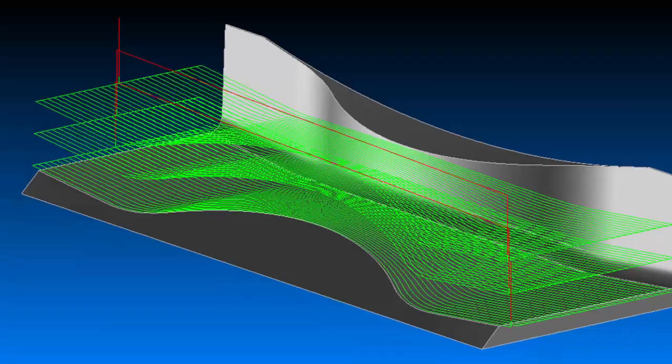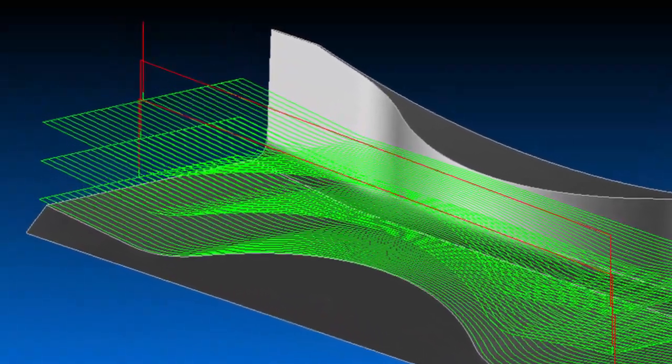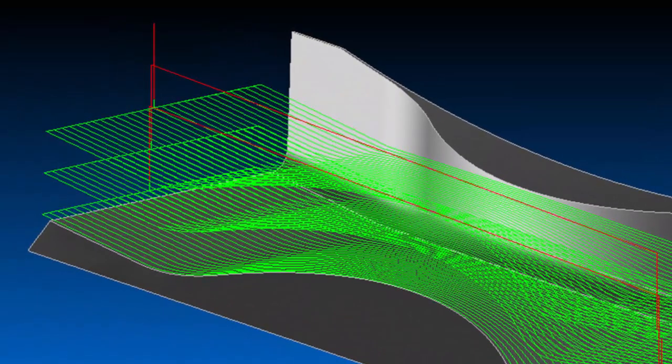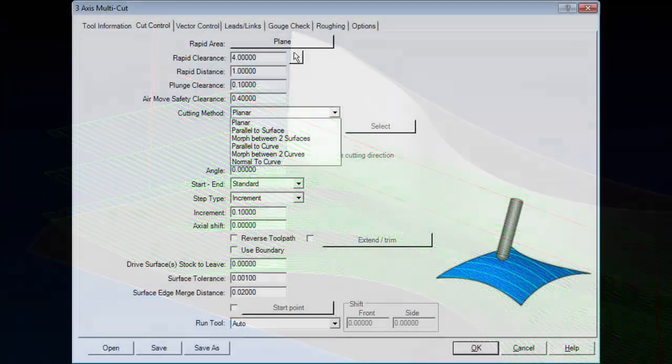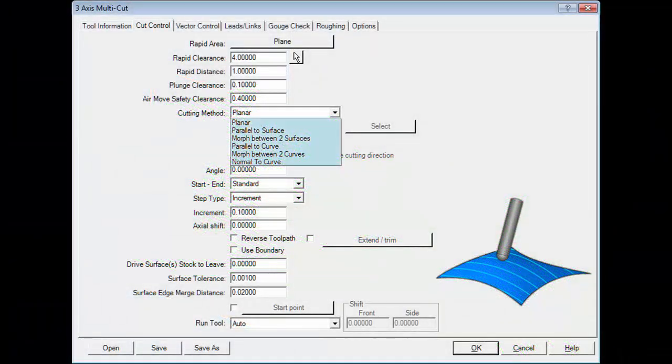This power and control was previously only available to 4- and 5-axis customers. 3-axis multi-cut's power comes from six different cutting methods, ranging from a hybrid planar to parallel to a curve and even morph between two curves.